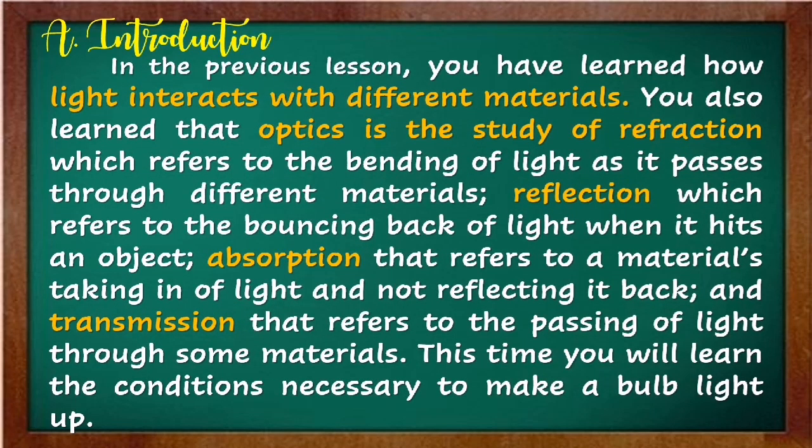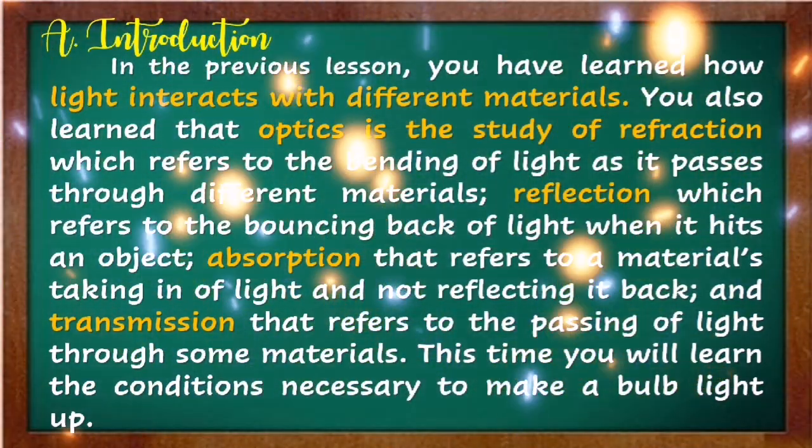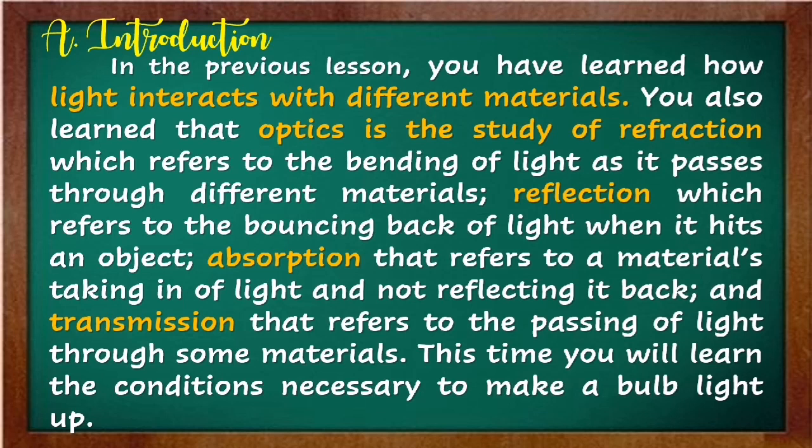In the previous lesson, you have learned how light interacts with different materials. You also learned that optics is the study of refraction which refers to the bending of light as it passes through different materials; reflection which refers to the bouncing back of light when it hits an object; absorption that refers to a material taking in of light and not reflecting it back; and transmission that refers to the passing of light through some materials. This time, you will learn the conditions necessary to make a bulb light up.